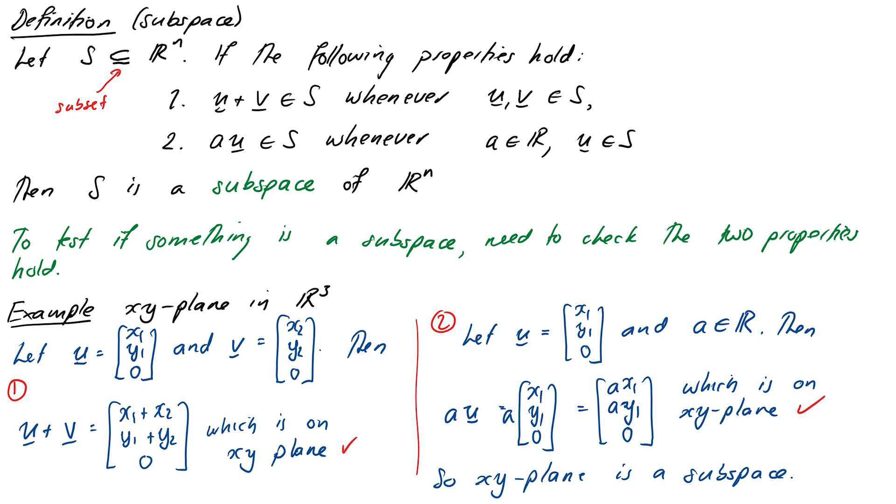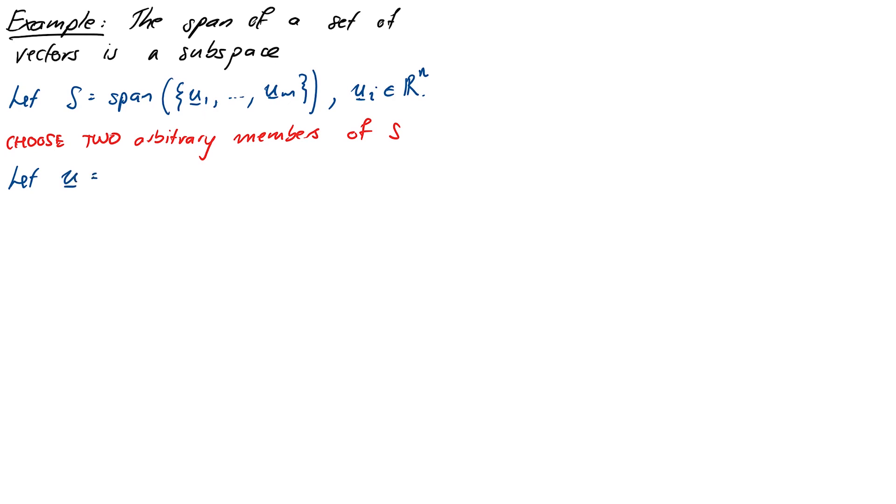Now we're going to move on to one that is a bit more abstract, but it's pretty fundamentally important. Our next example is to show that the span of a set of vectors is a subspace. So let S be the span of M vectors U1, U2 through to UM, where the vectors are themselves all in RN. Just note the difference between the M and the N here. To test the first subspace property, we need to choose two arbitrary items in our set. We're going to let x be A1U1 plus A2U2 through to AMUM all added up. So I've just taken a linear combination of the U vectors. And then y needs to be a different linear combination: Y is B1U1 plus B2U2 all the way through to BMUM.